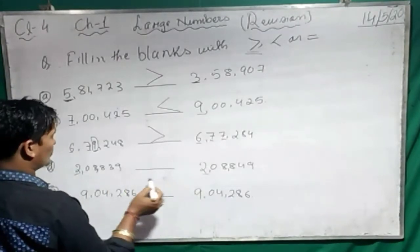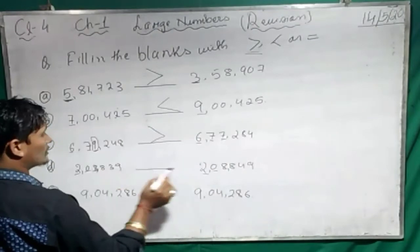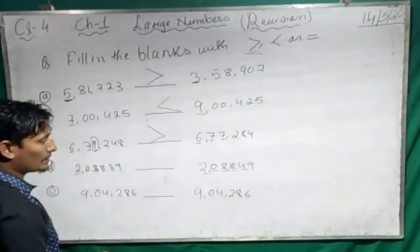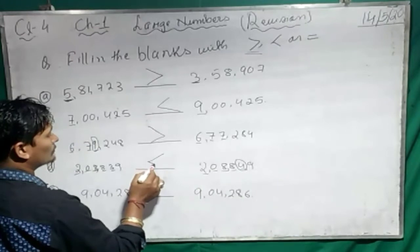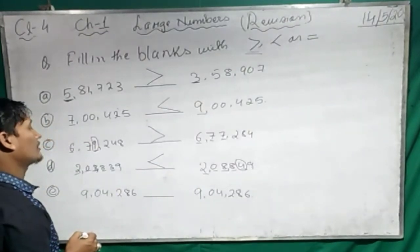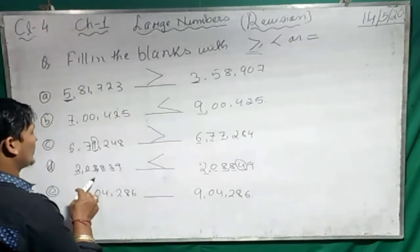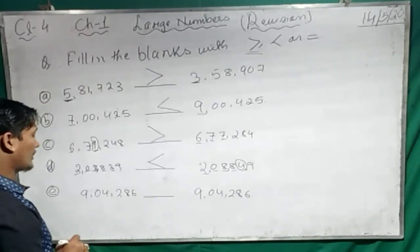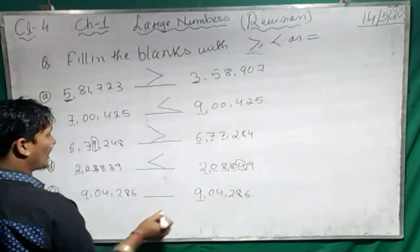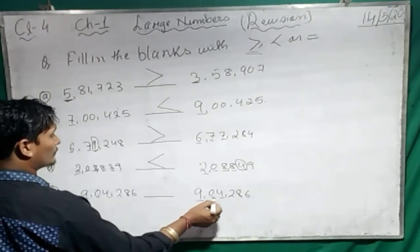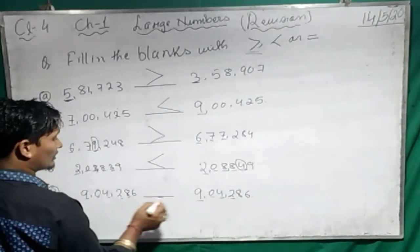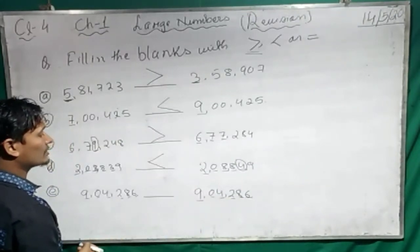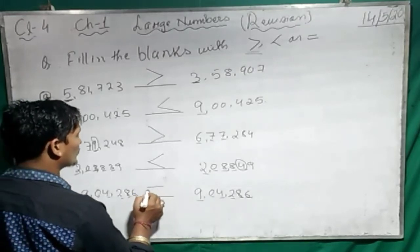Next example: 2 and 2, 0 and 0, 8 and 8, 8 and 8, 8 and 8, then 3 and 4. Which one is bigger? 4 is bigger. So we write the smaller-than sign, because 2,08,839 is smaller than 2,08,849. Next: comparing 9,90,04,268 and 9,90,04,268 — both sides the number of digits and the numbers are the same, so we use the equal to sign.